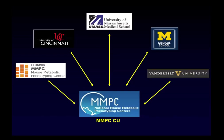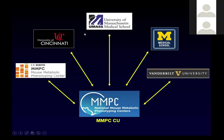The mouse metabolic phenotyping centers have been around for quite some time. They were established back in 2001 and go through competing renewals every five years. During this current five-year funding cycle, there are five mouse metabolic phenotyping centers across the country: University of California Davis, University of Cincinnati, University of Massachusetts, University of Michigan, and Vanderbilt University. My group runs the MMPC coordinating unit.